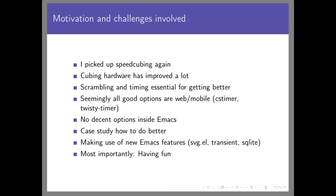This motivated me to get back into this weird hobby, and for that you need to be good at producing a truly random scramble and timing your attempts to get better. There is existing software for scrambling, recording, and timekeeping — the CSTimer software or the Twisty Timer app on Android — but to my surprise I did not find a single decent option inside Emacs.